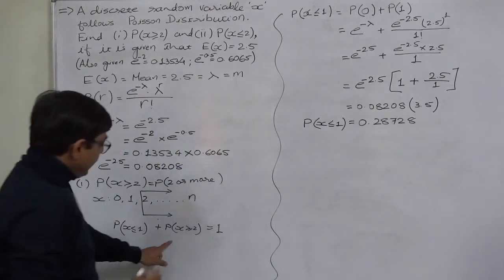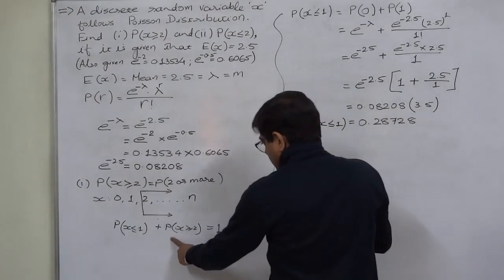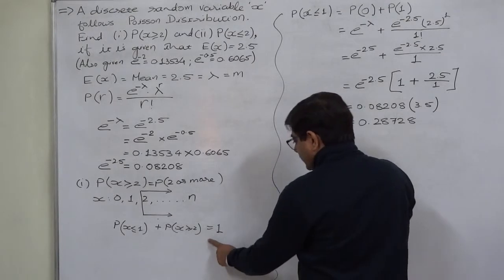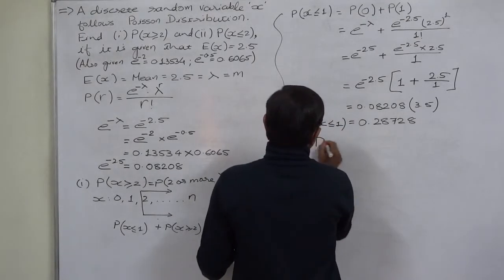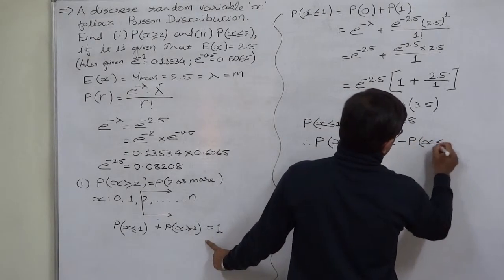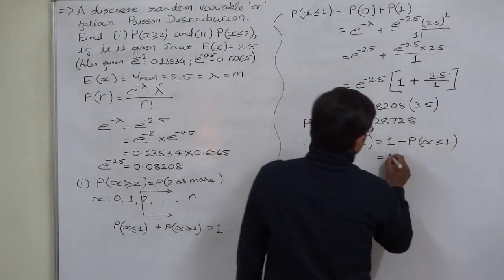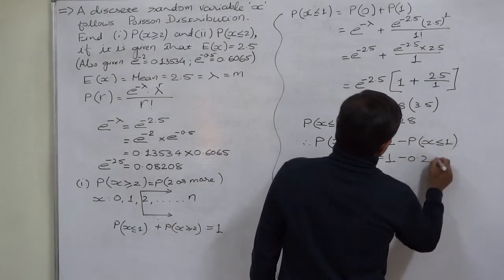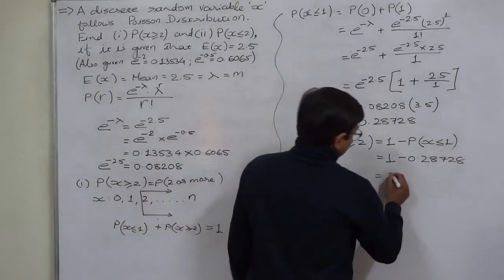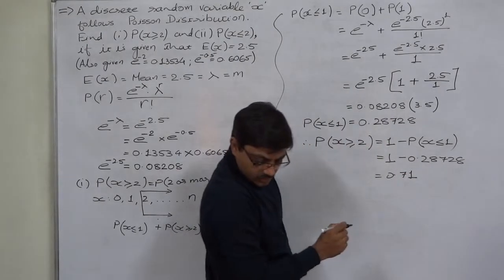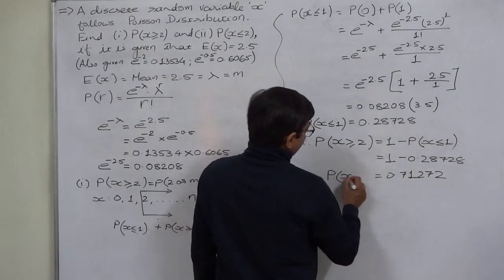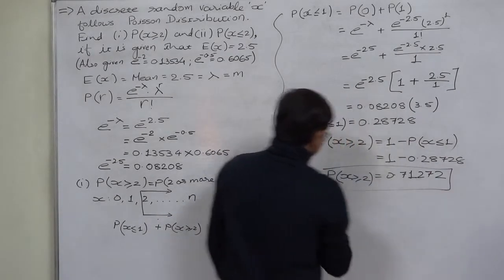Now using the complement equation: P(X ≤ 1) + P(X ≥ 2) = 1, so P(X ≥ 2) = 1 − P(X ≤ 1) = 1 − 0.28728. Ultimately we get the answer: P(X ≥ 2) = 0.71272.